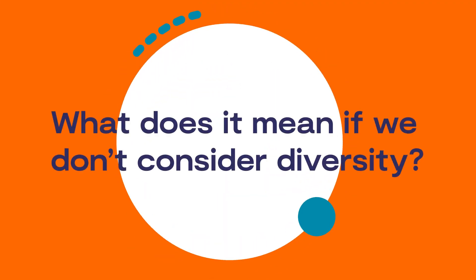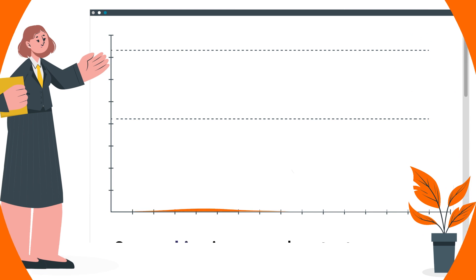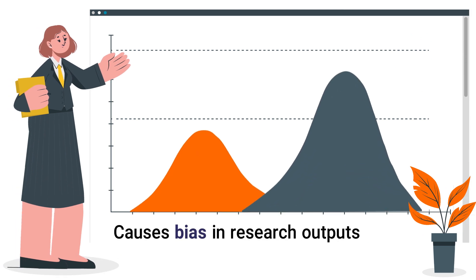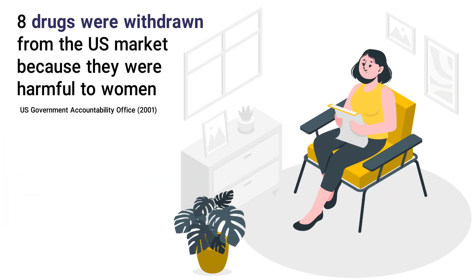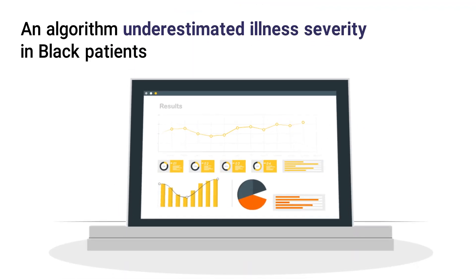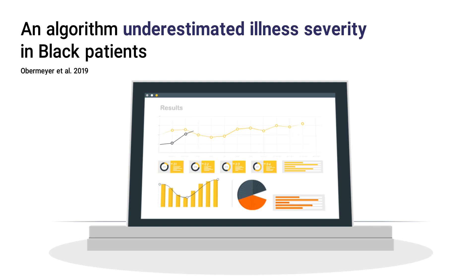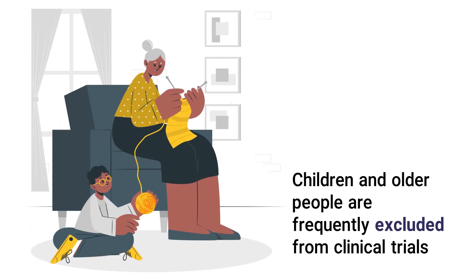What does it mean if we don't consider diversity? It can cause bias in research outputs. For example, eight drugs were withdrawn from the US market because they were harmful to women. An algorithm underestimated illness severity in black patients. Children and older people are frequently excluded from clinical trials.